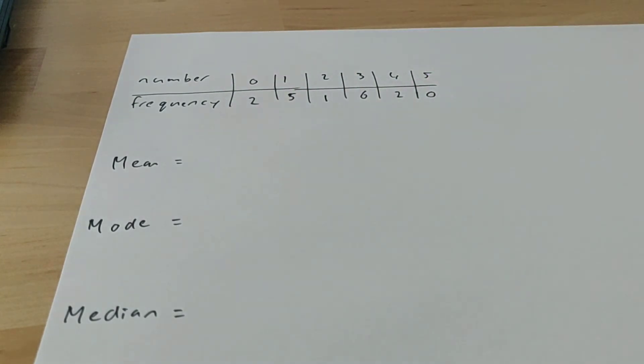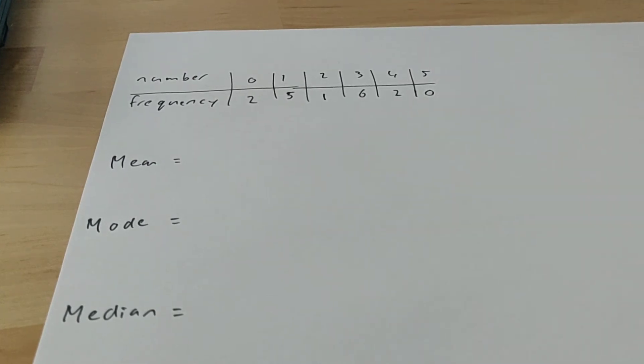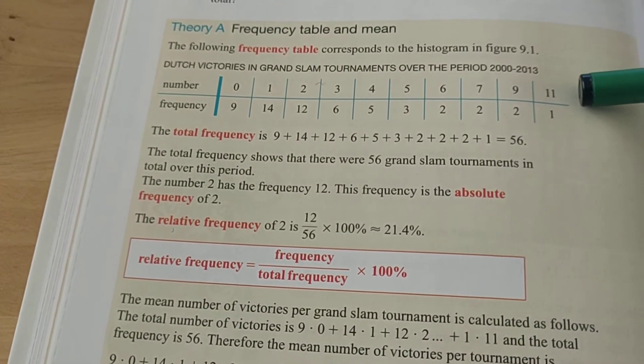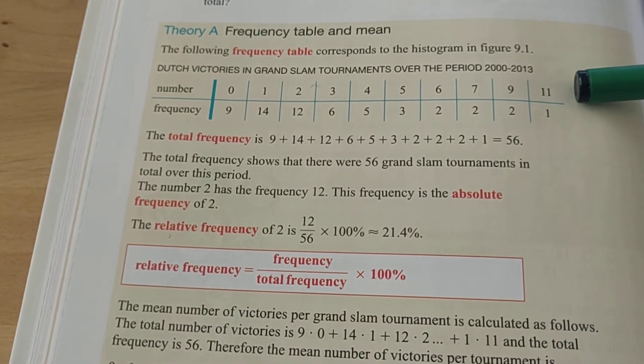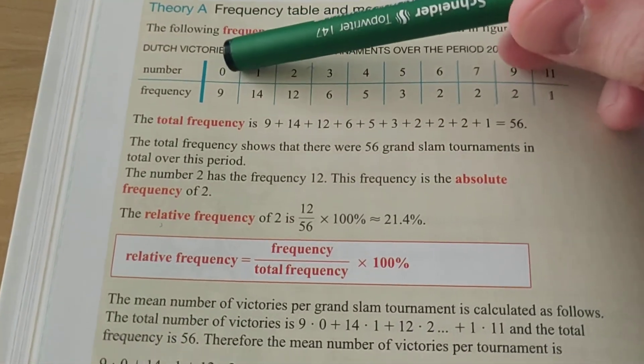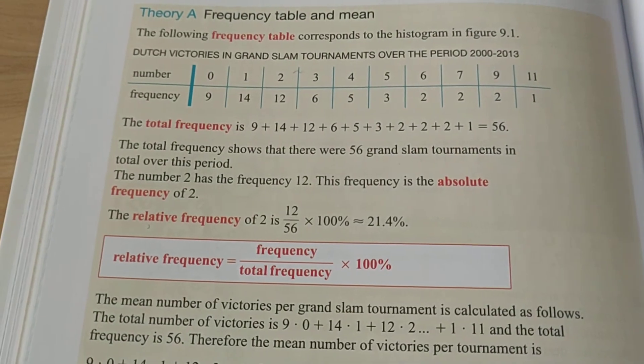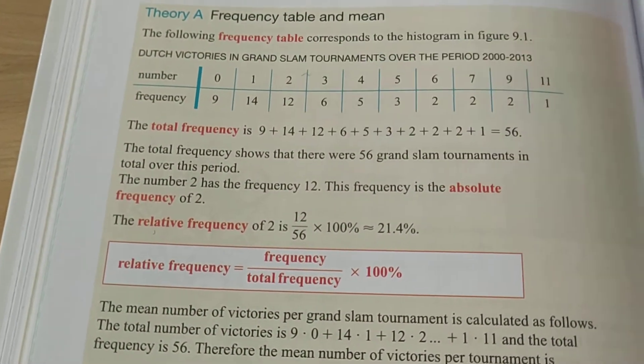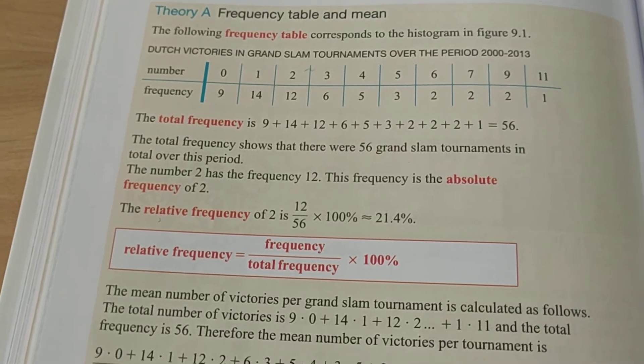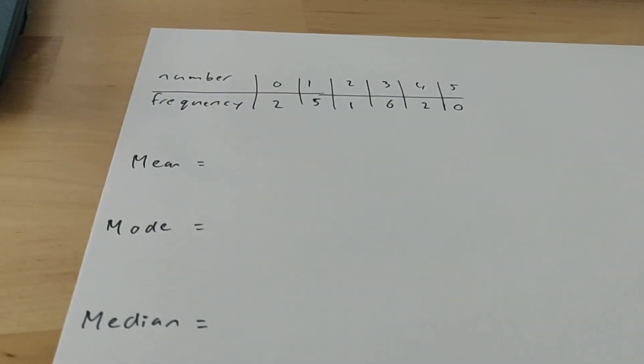The frequency means how many times those numbers occur. There is no story here, but if you take a look in the book, we see a different example. It says the following frequency table corresponds to this histogram. These are the Dutch victories in Grand Slam tournaments over this period. That means 0 victories happened 9 times, 1 victory happened 14 times. So this is how that works. Here you can find all the other information also. I'm going to go back to the schedule that I made over here.